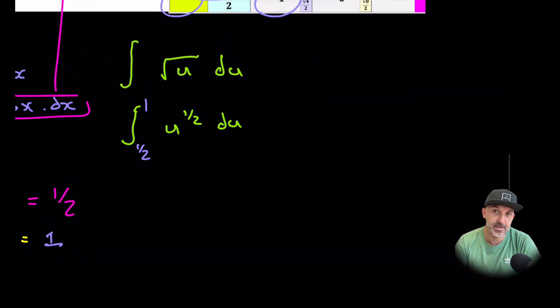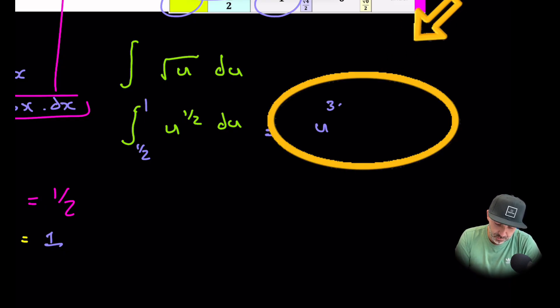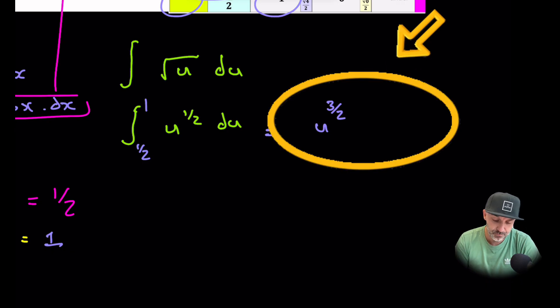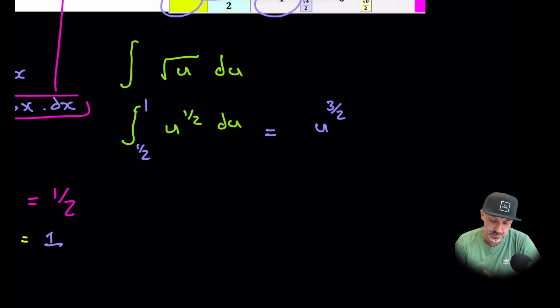So when we do that, we add one to the power and divide by the new power. So we're going to get three over two, because you can add two over two and it gives three over two divided by three over two is the same as times by two over three. And then also we have our limits that we have to substitute in here, which are going to be upper limit is one and a half.